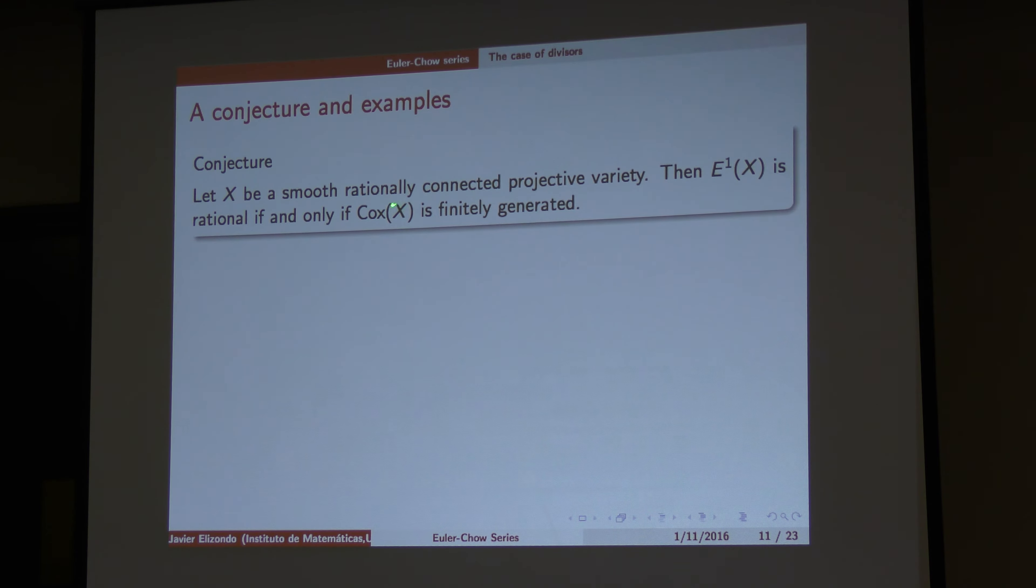So, the conjecture that we have is, if X is a smooth, rationally connected projective variety, then the series is rational even if the Cox ring is not finitely generated. And this is it on the space is somewhere between the space. So, the series as you can see, the series is connected to many different things. And we don't know exactly what is the role of the series playing.